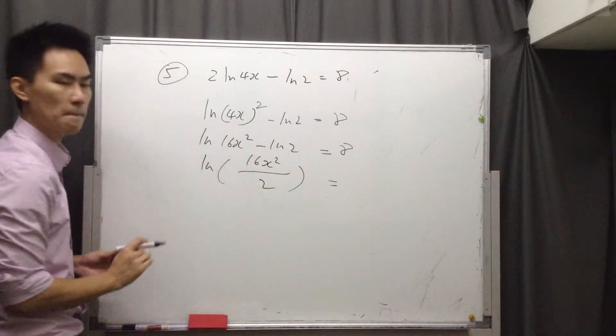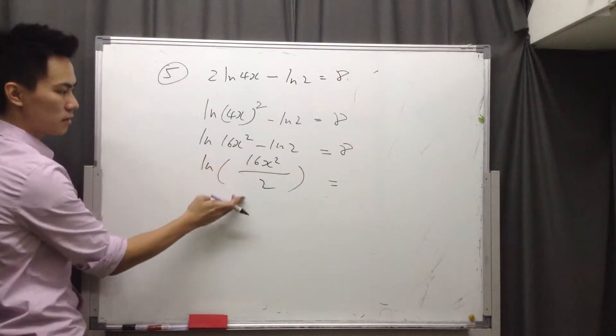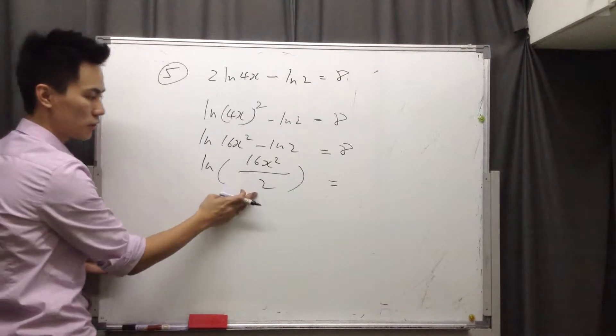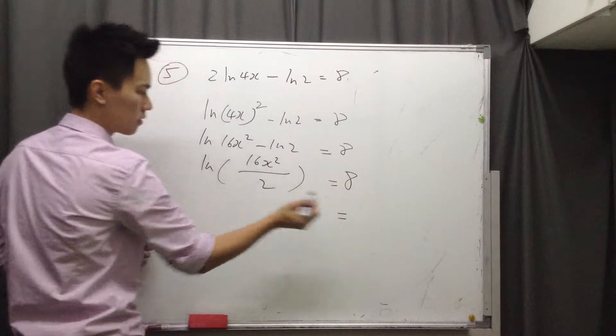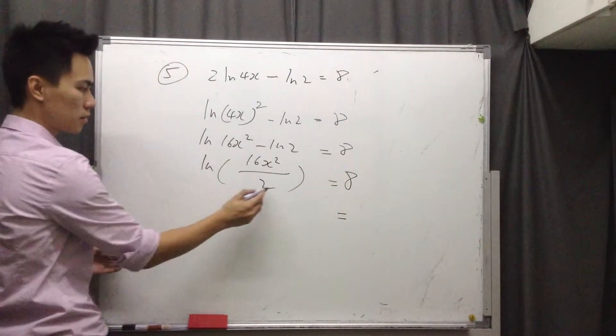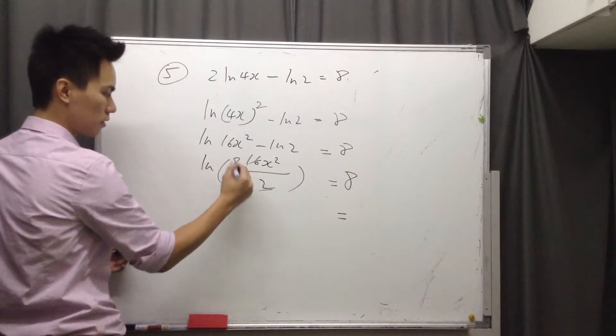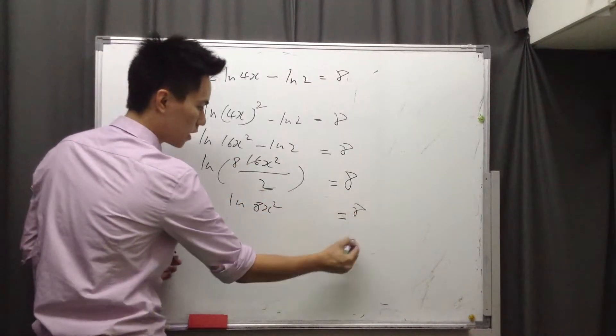So 16x squared over 2 equals 8. So you will have ln 8x squared equals 8.